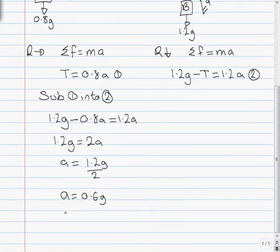So a equals 0.6g. I'm going to put down the numerical value for a. So a equals, I'm putting it in the calculator, 5.88 meters per second squared. So that's my a.